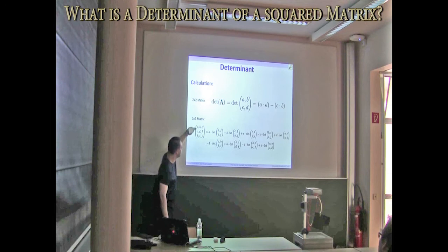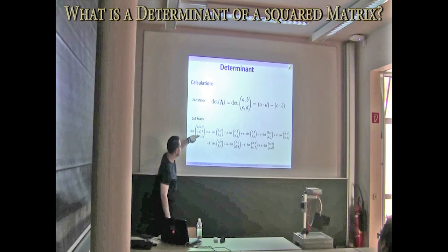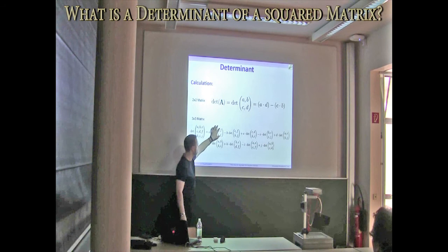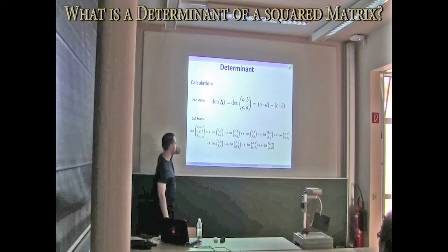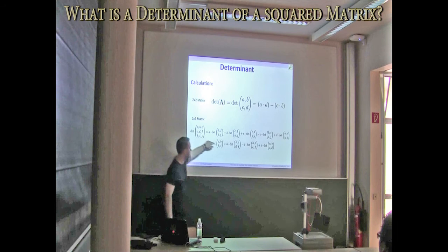We have to remove this row and this column here, and this means for this first value, A, times the determinant of this sub-matrix here. You see the first contribution, or the contribution of the first value, A. For the B, you have to remove this column and this row.